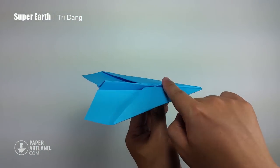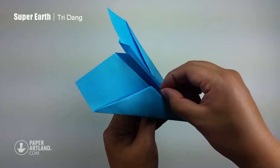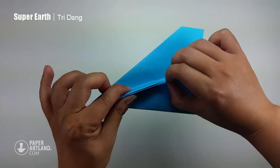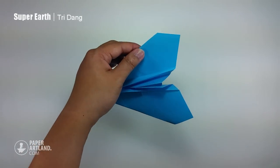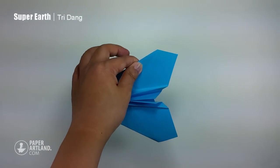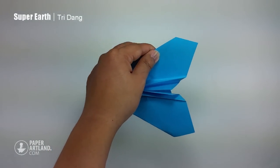And you can see the bottom here is kind of straight. This will help you to hold the paper airplane easier. This will fly much more stable than the earth fighter. And you can see the edge here.